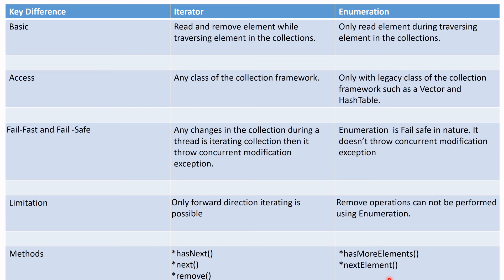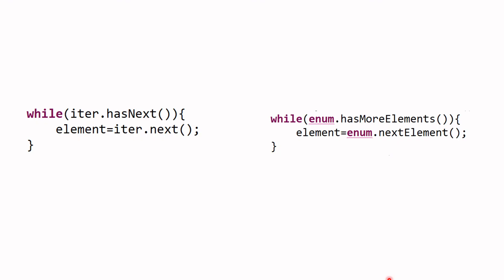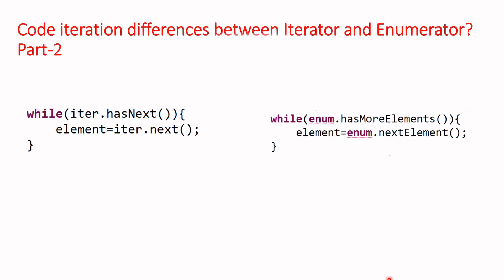Both Iterator and Enumeration support only forward-direction element traversal, and both are cursor programming functionality in the collections. If you have any doubts, please ping me or leave a comment and I will explain more. When using Iterator, we use hasNext(); when using Enumeration, we use hasMoreElements().